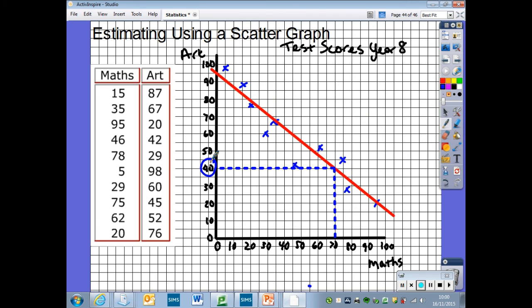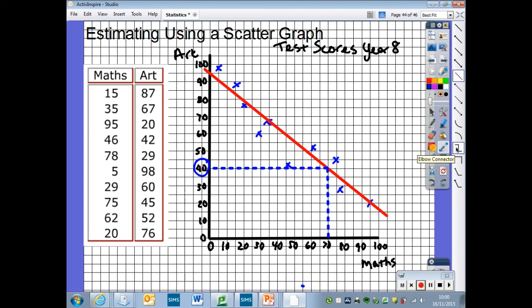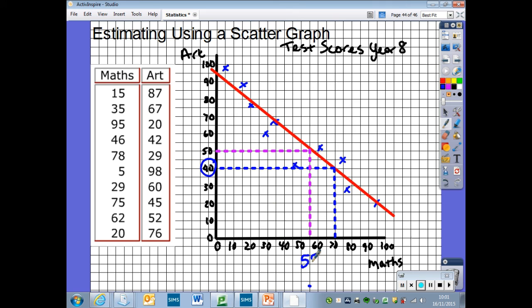Question two asked us to find out what is the likely math score with an art score of 50. So we're going to do the opposite. This time we're going to go up the y-axis to 50 to find the art score of 50, and draw a line with a pencil and ruler from 50 into our line of best fit. We're then going to draw a perpendicular line down to the x-axis. Now, you can see that the line comes in between 50 and 60, and so our answer is going to be 55 marks, 55%.